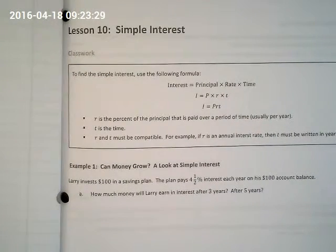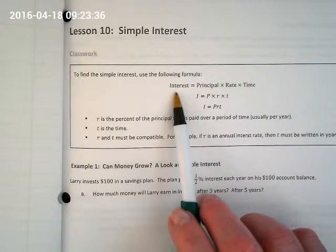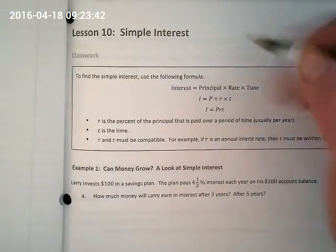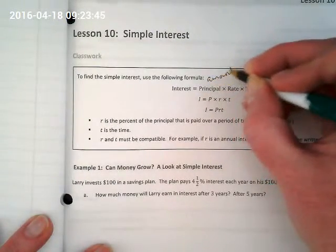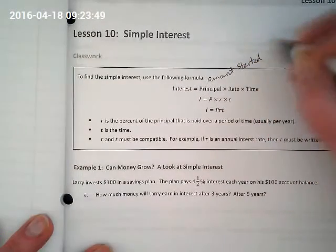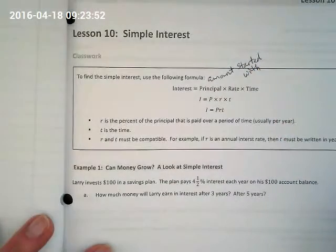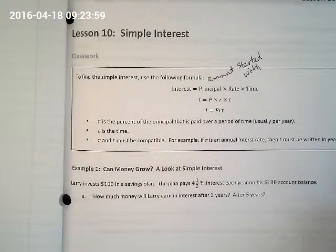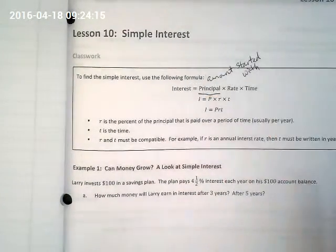Some important vocabulary to start off with: Interest equals three things - the principal, rate, and time. The principal means either the amount you started with to save or the amount you borrowed. It's the amount you started with either way. So if you open a savings account and put in $50, that's your principal. Or if you bought a car and borrowed $6,000, the people you borrowed from will charge interest based on that principal of $6,000.